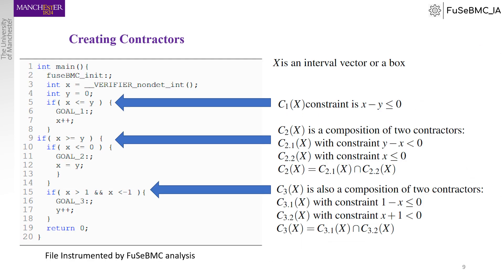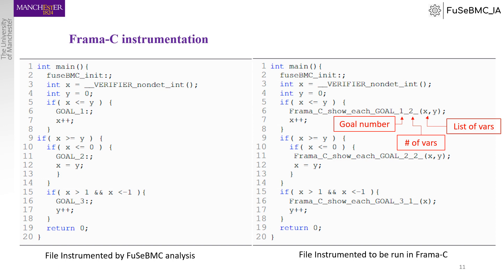When we create contractors, first we create constraints for each goal. For the first goal, we have only one constraint, so we have one contractor. In the second and third goals, we have an intersection of two contractors, each with a single constraint. Generally, all set membership operations are viable here, including union and difference. Then we start instrumenting the file for PROMCIA. On the right, we see the instrumentation done by FUSI-BMCIA to be analyzed by PROMCIA.